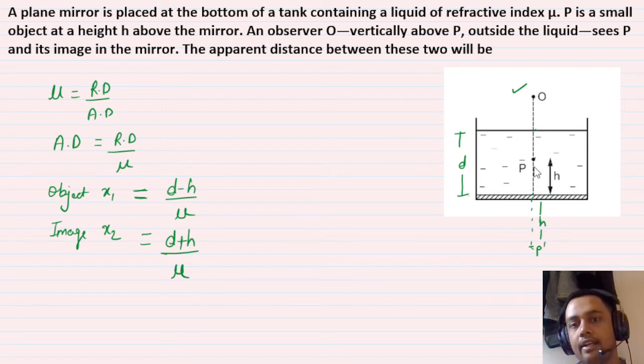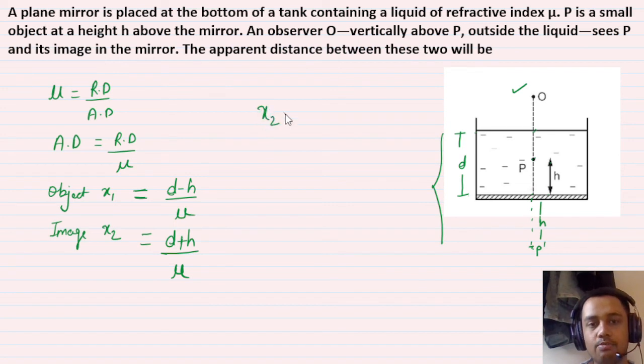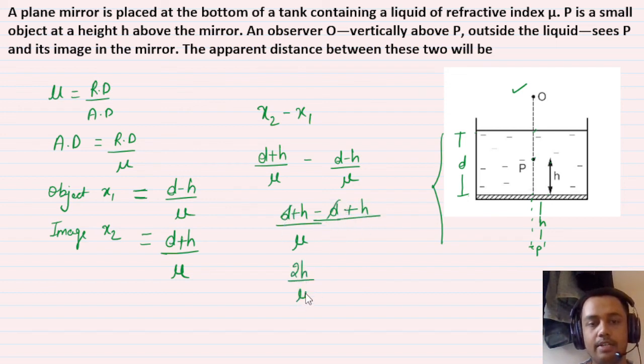We need to find the distance between object and image. The final answer is x2 minus x1: (D+H)/μ minus (D-H)/μ. Taking μ as LCM: (D+H-D+H)/μ. D cancels, giving 2H/μ as the answer.